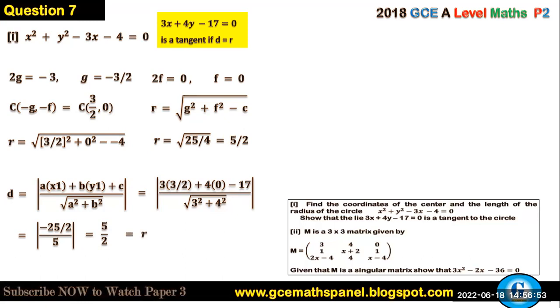We see that the perpendicular distance from the center of the circle to the tangent is equal to the radius, and therefore that line is a tangent to this circle.